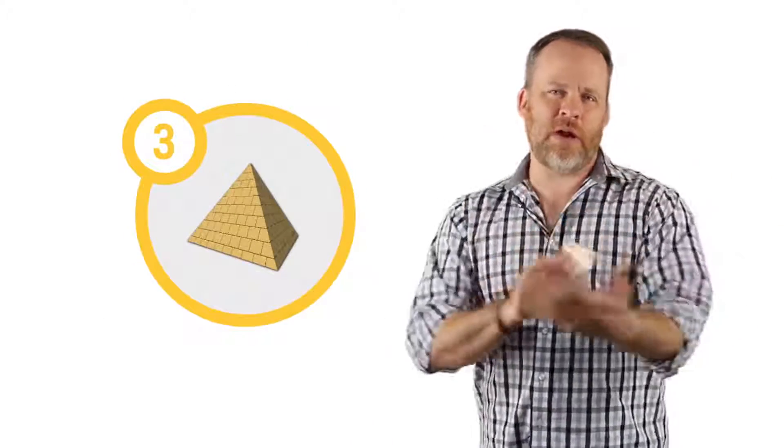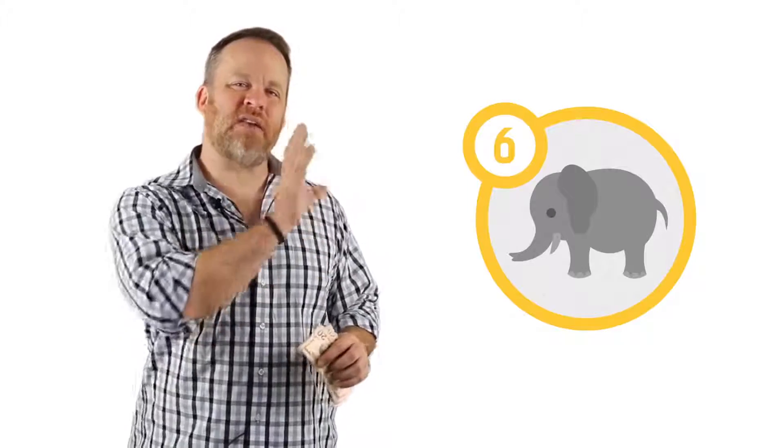My picture for the number one was a pencil because a one looks like a pencil. My picture for the number two was a duck because a duck's neck kind of looks like a number two. Three was a pyramid because there's three sides to a pyramid. Four I determined would be a box because there's four sides on a box. Number five was a star because there's five points on a star. Number six I made it an elephant because if you turn the number six on its side, a number six kind of looks like an elephant, the body of the elephant and then the trunk.